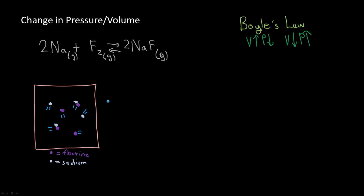Now let's look at how the equilibrium point shifts as we change the pressure or volume of an equation. Boyle's Law tells us that volume and pressure are inversely related: when volume goes up, pressure goes down, and when volume goes down, pressure goes up.